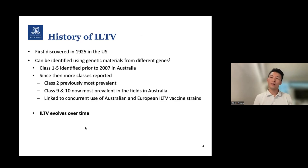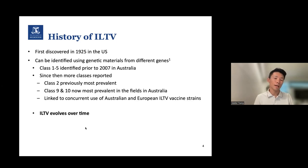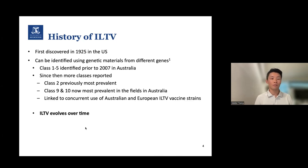A little bit on the history of ILTV. The virus was first discovered in 1925 in the U.S. Different classes of ILTV can be identified using genetic material from different genes. Classes 1 to 5 were previously identified prior to 2007 in Australia. Since then, class 2, and then class 9 and 10 have been reported. Class 2 was previously the most prevalent, and has now been replaced by class 9 and 10. There's a linkage between class 9 and 10 and the concurrent use of Australian and European ILTV vaccine strains. The key message is that ILTV evolves over time, and that changes the disease it can cause in the industry.